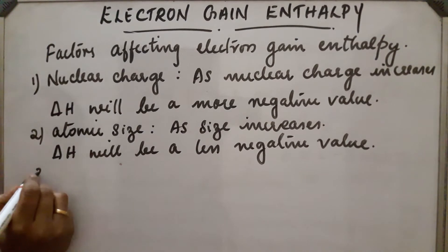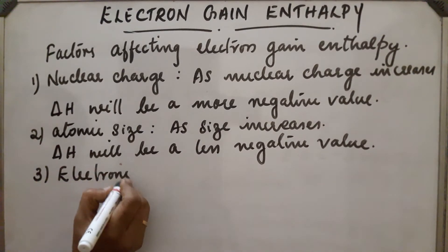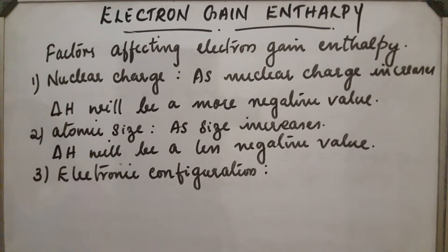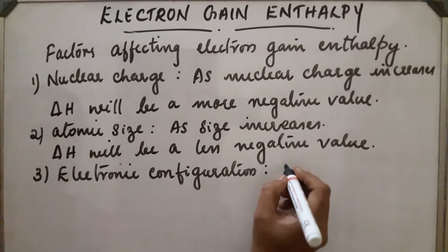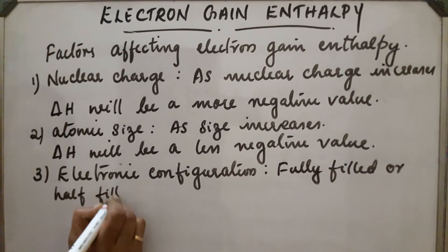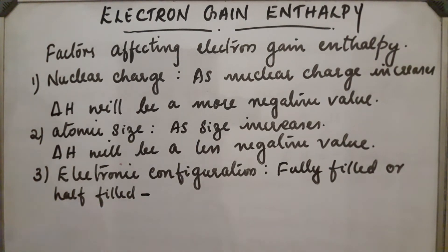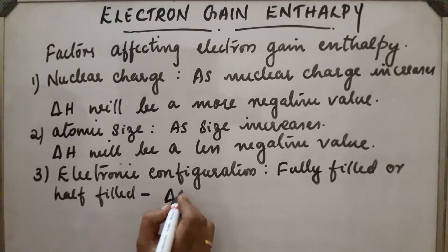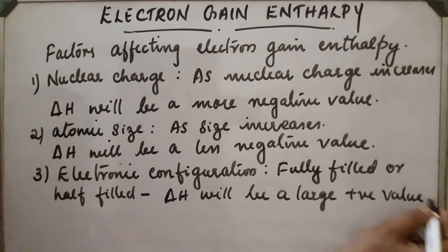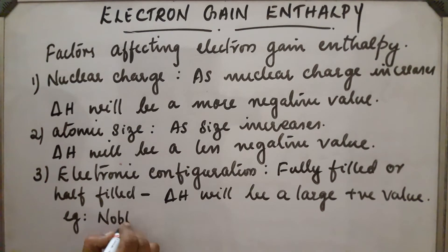Third factor: electronic configuration. In a half-filled or fully-filled configuration, we have to supply energy to add an electron to an atom, so electron gain enthalpy has a large positive value. We already discussed the example of noble gases. These are the factors affecting electron gain enthalpy.